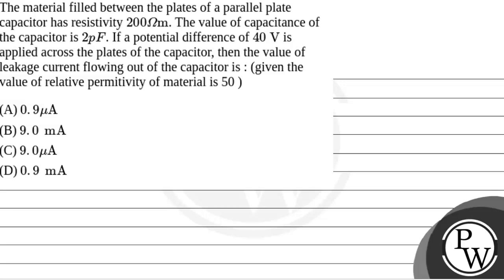Let's read the question. The question says that the material filled between the plates of a parallel plate capacitor has resistivity 200 ohm meter. The value of capacitance of the capacitor is 2 picofarad. If a potential difference of 40 volt is applied across the plates of the capacitor, then the value of leakage current flowing out of the capacitor is given that the value of relative permittivity of material is 50.